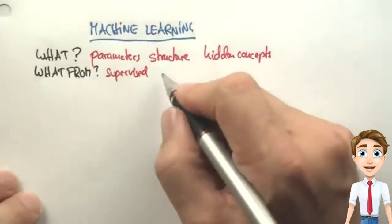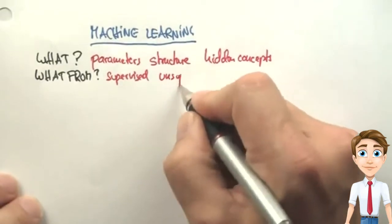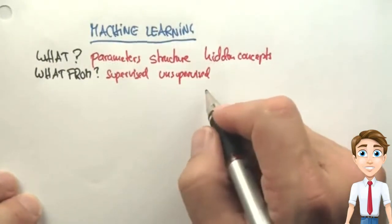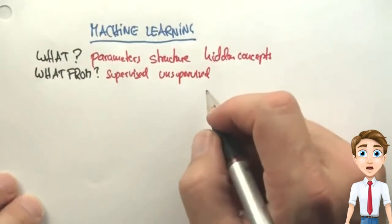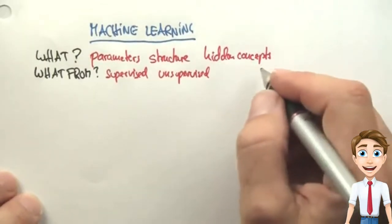We also talk about unsupervised learning, where target labels are missing and we use replacement principles to find, for example, hidden concepts.